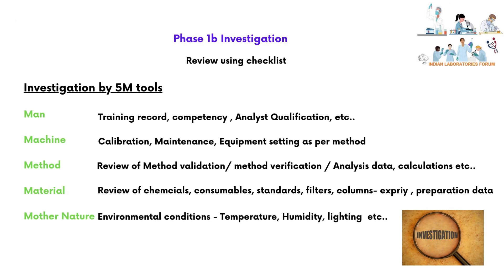Phase 1b investigation uses a predefined checklist with the 5M investigation tool: MAN, Machine, Method, Material, and Mother Nature. MAN includes a review of training records, competency, and analyst qualification. Machine includes a review of calibration, maintenance, and equipment settings as per method. Method includes a review of method validation or verification, analysis data, and calculations. Material includes a review of chemicals, consumables, standards, filters, columns, their expiration, preparation data, and storage data. Mother Nature includes environmental conditions such as temperature, humidity, and lighting.